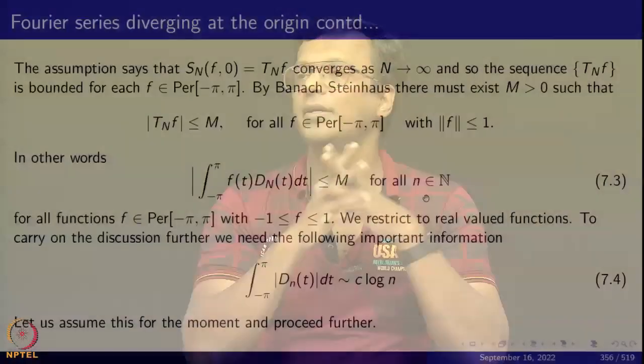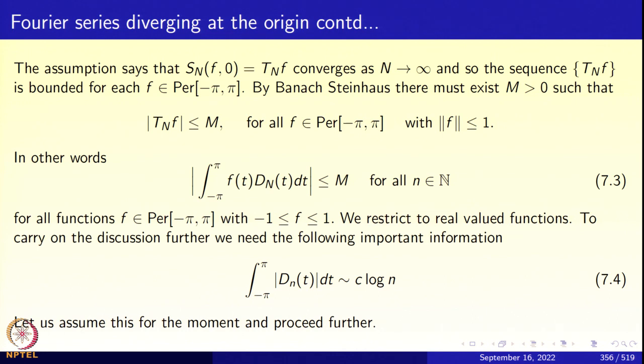Last time we assumed that the Fourier series of every continuous 2π-periodic function converges pointwise, in order to obtain a contradiction. Under that assumption, we concluded by the Banach-Steinhaus theorem that there must be a constant M such that inequality 7.3 holds: the modulus of the integral from −π to π of f(t)·Dₙ(t) dt is less than or equal to M, for all continuous 2π-periodic functions.